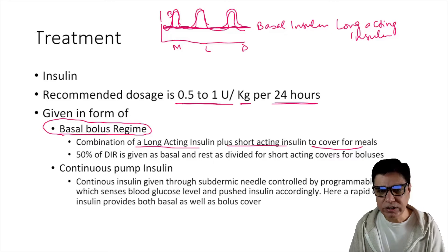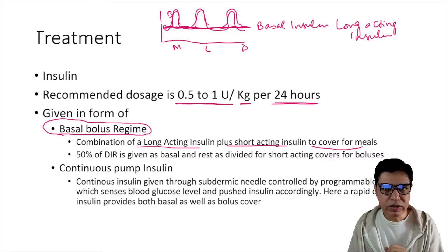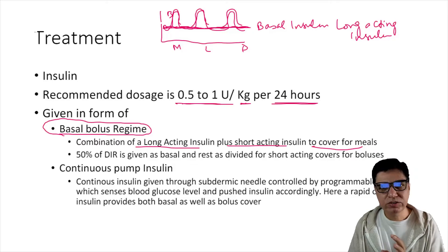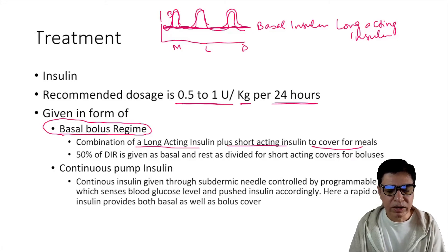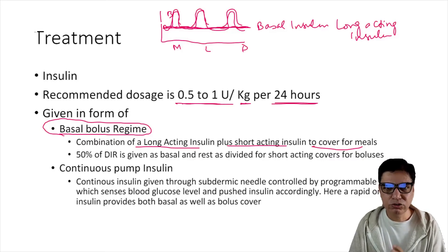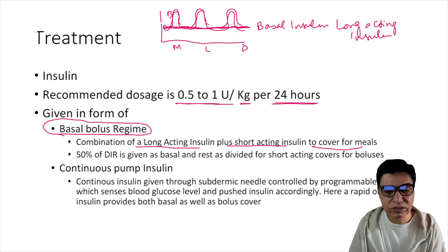Pre-mixed insulin regimes — such as 70/30, given two-thirds in the morning and one-third in the evening — are not recommended. Research has shown that pre-mixed insulin leads to poor glycaemic control. These should not be used in paediatric practice.